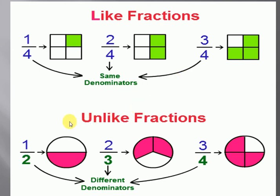In another example, 1 by 2, 2 by 3, and 3 by 4. In these three fractions, the denominator is different — that are 2, 3, and 4. So this is the example of unlike fractions.